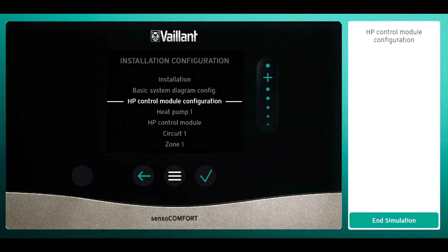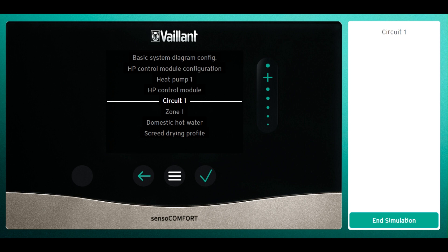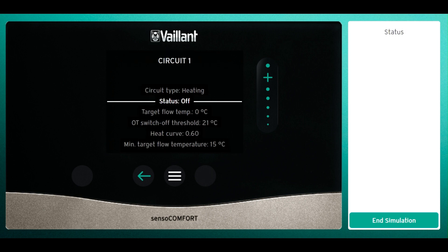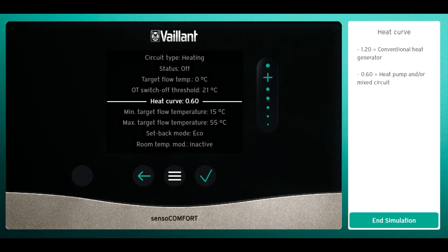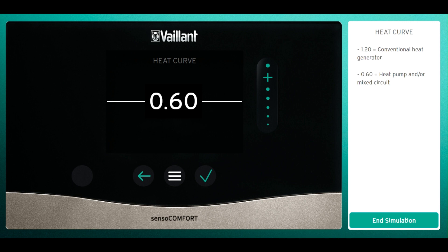Scroll down to circuit one and press tick again. Scroll down to heat curve and here we can see that the curve is set currently at 0.60, which is the standard.